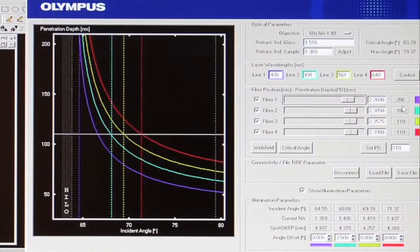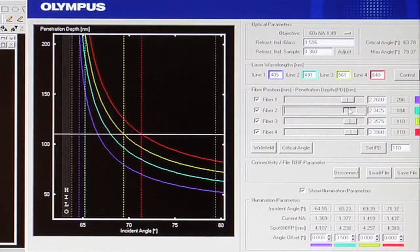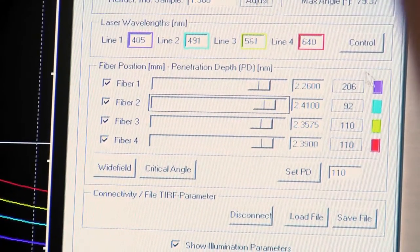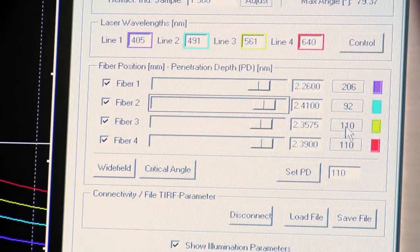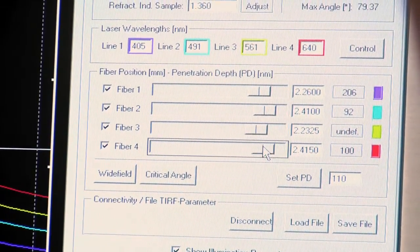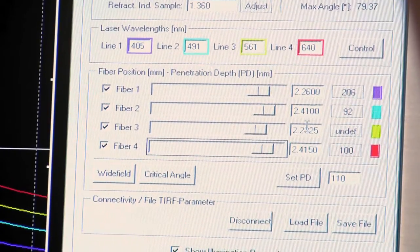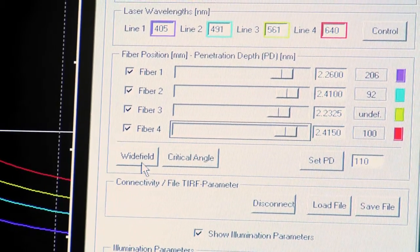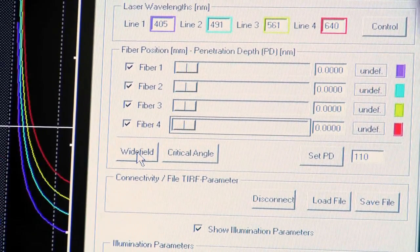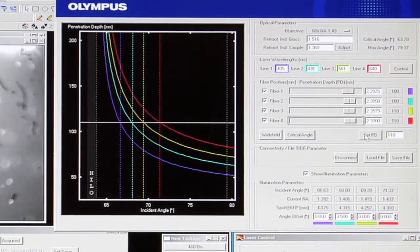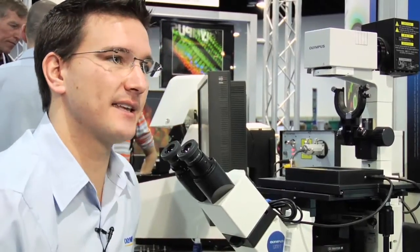We have individual control of each of the lines. So we're really able to go ahead and adjust these individually to make sure that we are achieving the same penetration depth for each of the lines. The same with the third and the fourth. Something that is nice that we can do is if we wanted to switch to wide field illumination. We can do that just by simply clicking here and all of the beams will go to the center of the back focal plane of the objective, giving us wide field. Clicking set penetration depth again takes us back into TIRF.